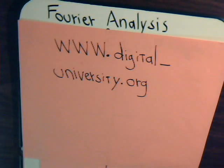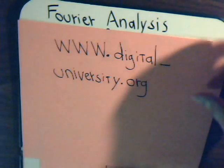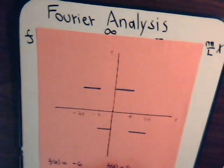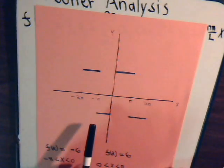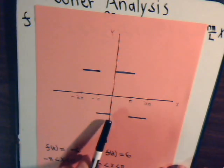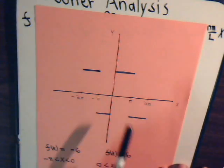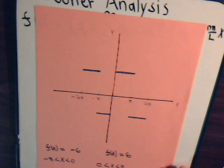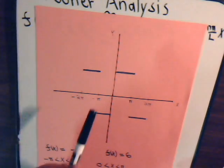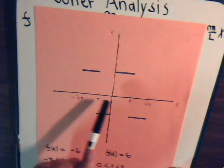This is video number 13 in our Fourier analysis series. A reminder that the playlist for all the videos is at the website digital-university.org. In this video we're going to take a look at a square wave function, where from minus π to 0 it has a value of minus 6, and then from 0 to π it has a value of plus 6. So the period of the function goes from minus π to plus π.